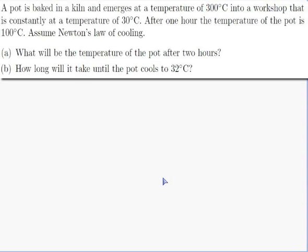The question is: a pot is baked in a kiln and emerges at a temperature of 300 degrees Celsius into a workshop that is constantly at a temperature of 30 degrees Celsius. After one hour, the temperature of the pot is 100 degrees Celsius. Assume Newton's law of cooling. Part A: what will be the temperature of the pot after two hours? And Part B: how long will it take until the pot cools to 32 degrees Celsius?